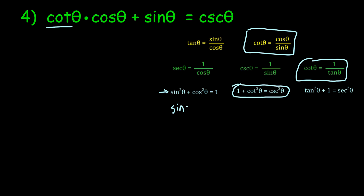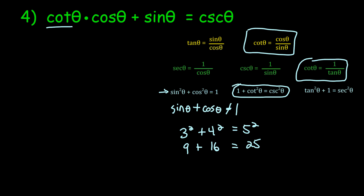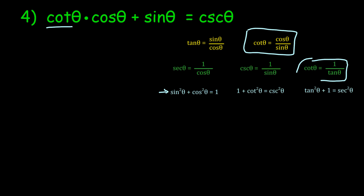Also worth noting: sine theta plus cosine theta does NOT equal one — that's not an identity. You can't just square root everything and say it works. For example, three squared plus four squared equals five squared is true, but three plus four does not equal five — it equals seven. So you cannot just drop the squares and call it good.